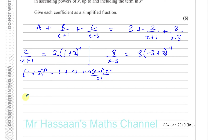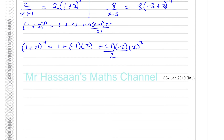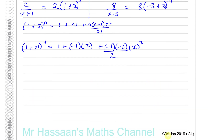For the first part, we already have a 1, so that's fine. Taking (1+x)^(-1) and applying the formula: we get 1 + (-1)(x) + (-1)(-2)/2! × x². The two minuses make a plus and the 2s cancel, so this gives us 1 - x + x². That's as far as we need to go for this part.